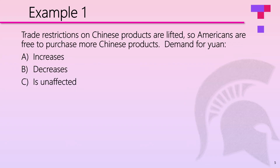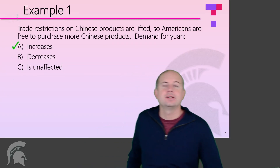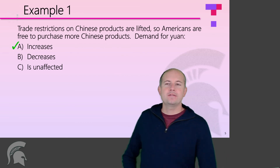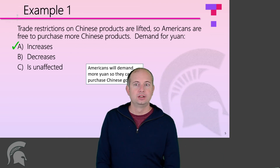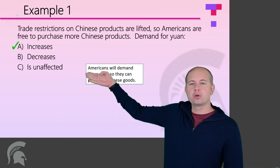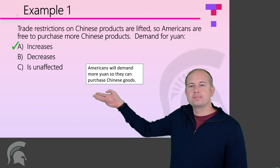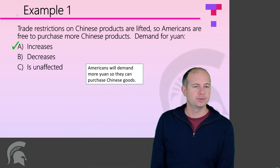The answer here is A — the demand for yuan increases. Americans will demand more yuan so they can purchase Chinese goods. Pretty straightforward.